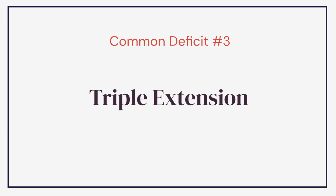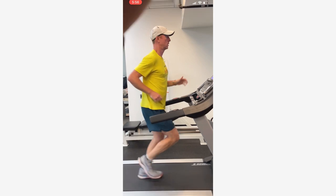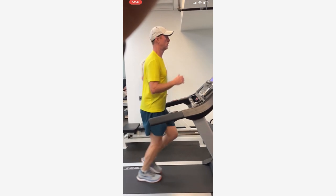Triple extension refers to the last push-off position in running — the hip getting extended back behind you, the knee fully straight, and then pushing off through the toes to generate power forward. Most forward momentum in running is generated from this position. It's not just about strength but about motor control — are we able to keep the hip extended back, the knee extended, and fully push up onto the toes?